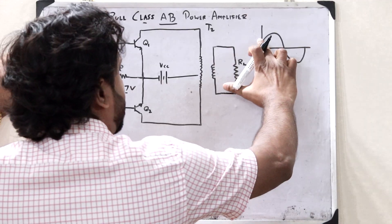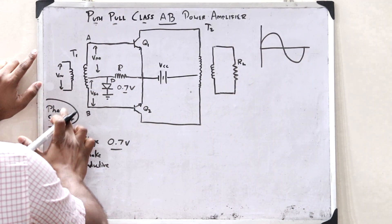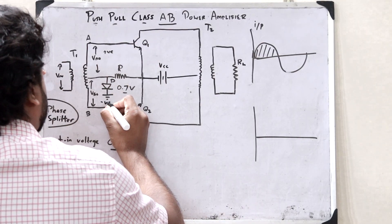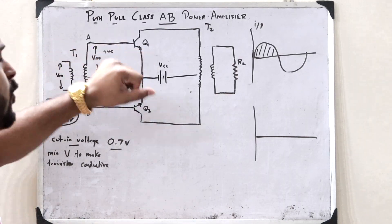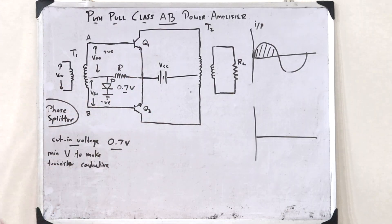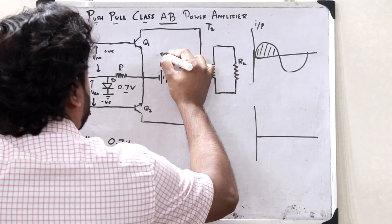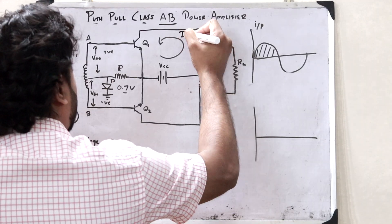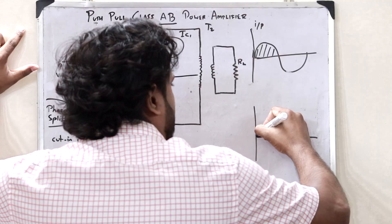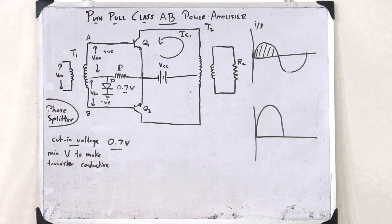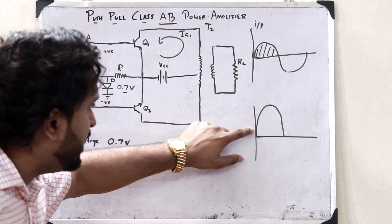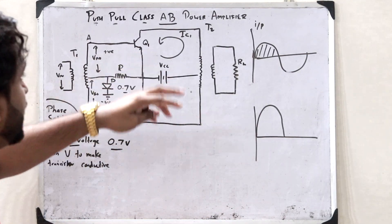Now let us see the case when we give an input signal onto the first phase splitter transformer. During the positive half, VAO becomes positive whereas VBO becomes negative. Since VAO is positive, Q1 becomes forward biased and Q2 becomes reverse biased. Therefore, Q1 is on and Q2 is off. We can see that a particular current starts flowing — let us term this as IC1. With the help of transformer T2, we obtain this across the load resistor RL as an amplified signal. The advantage is that even at zero volt input, we get a correspondingly very small output.